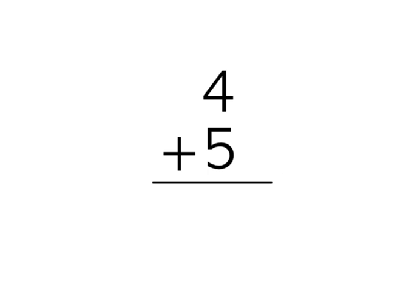When we add a doubles plus one, we always double the smallest number and then add one more.